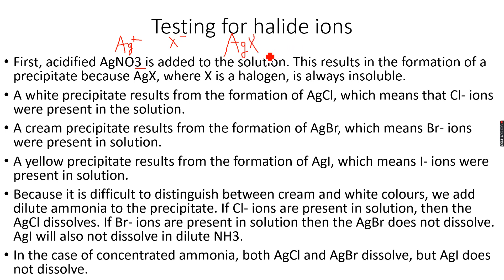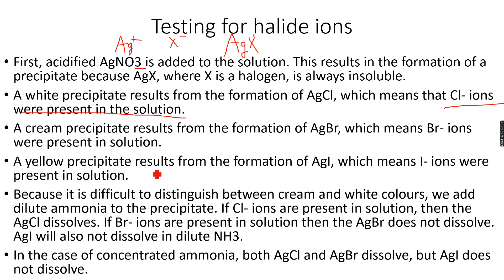AgX is always a precipitate. AgCl is a white precipitate — if we see a white precipitate, Cl⁻ ions are present in solution. AgBr is a cream precipitate — if we get a cream precipitate, Br⁻ ions were present in solution. AgI is a yellow precipitate — if we get a yellow precipitate, I⁻ (iodide ions) were present in solution.